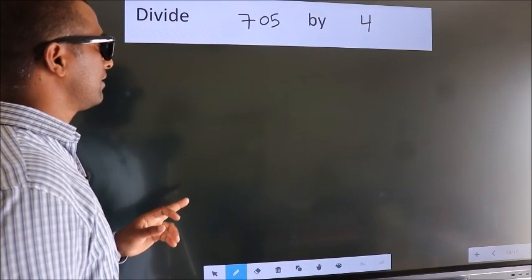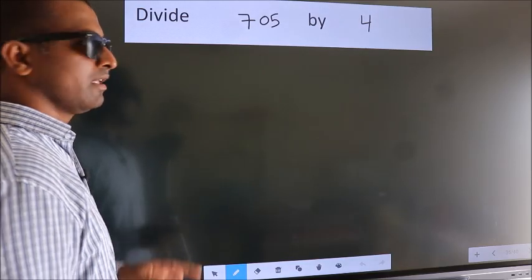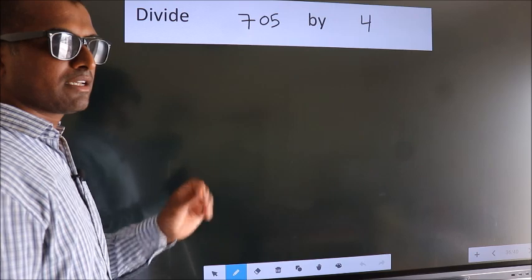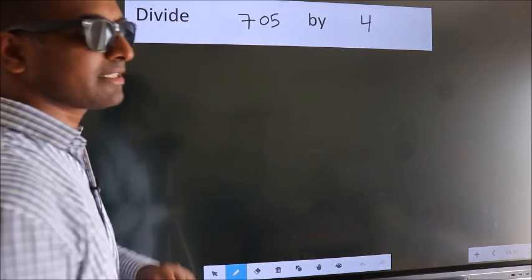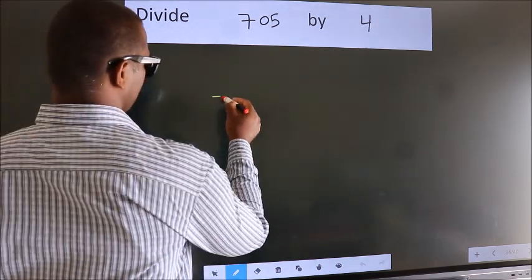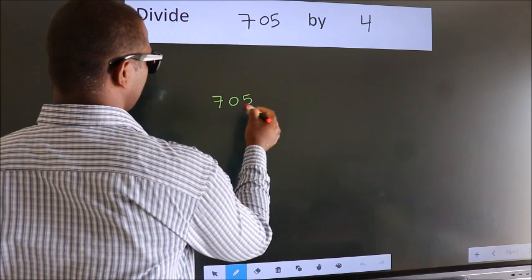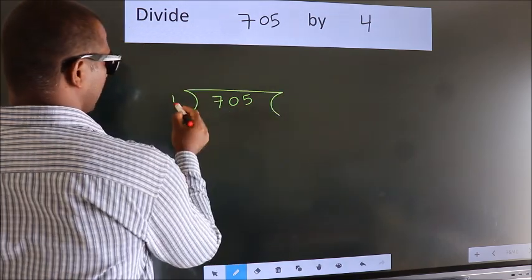Divide 705 by 4. To do this division, we should frame it in this way. 705 here, 4 here.